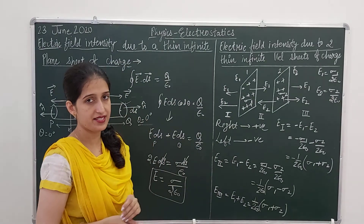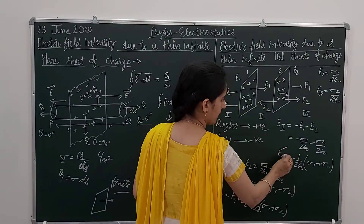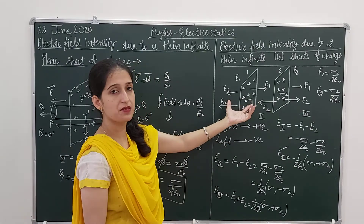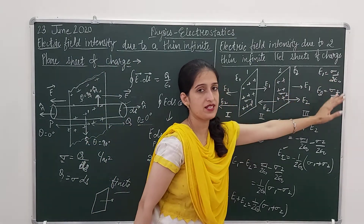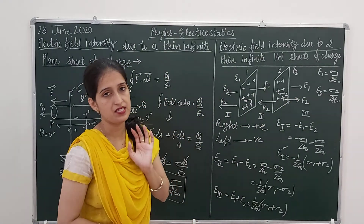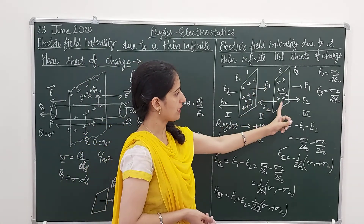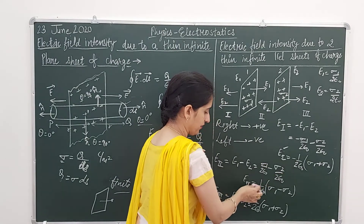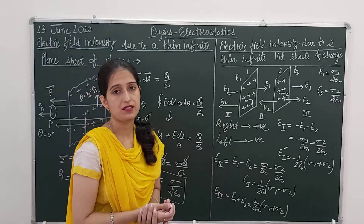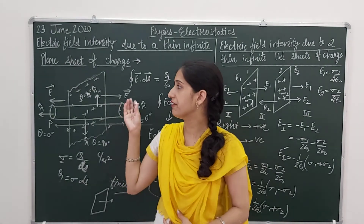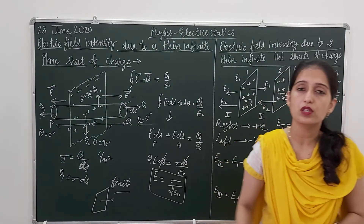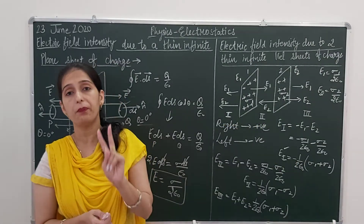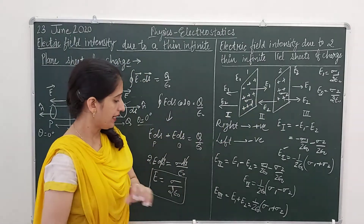These are the electric field intensities in the three regions. E_Region1 and E_Region3 have the same magnitude (1/2ε₀)(σ₁ + σ₂) but opposite signs, which is clearly visible — in Region 3 the electric field is towards the right, in Region 1 it is towards the left, and in between they have opposite directions. We are doing this for numericals — we should know this result: that due to an infinite plane sheet, E = σ / 2ε₀, and we use that to find the field due to two parallel sheets.